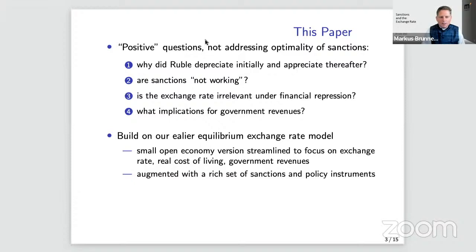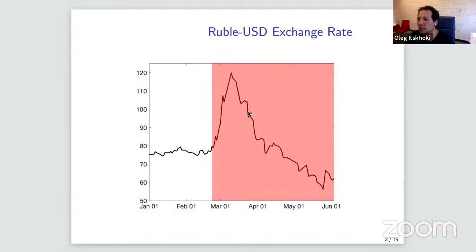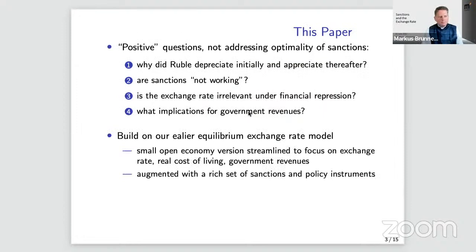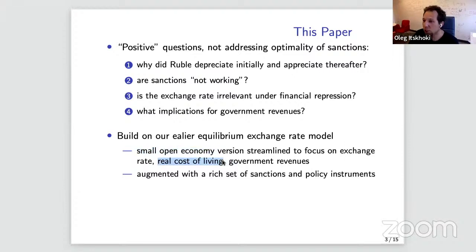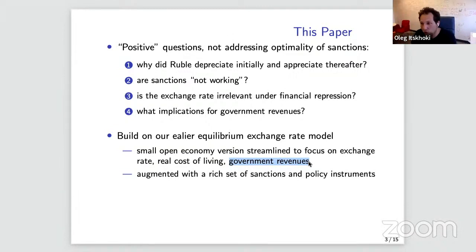Someone asked for a counterfactual: if there were cold-turkey sanctions on February 25, 2022, would the exchange rate have moved very differently? That's a good question and the mechanism will explain it. The approach builds on earlier work with Dima using fairly rich models for exchange rates, which we simplify here to a small open economy version, keeping only the essential parts to make our points.